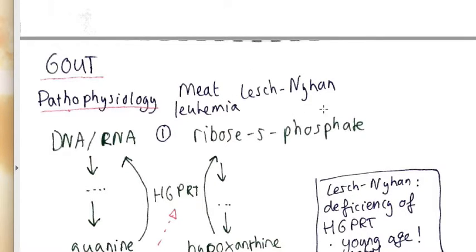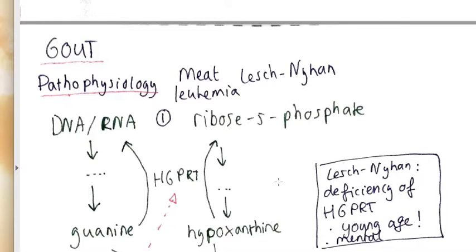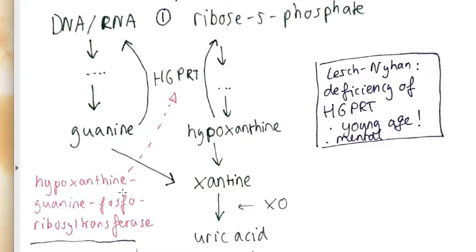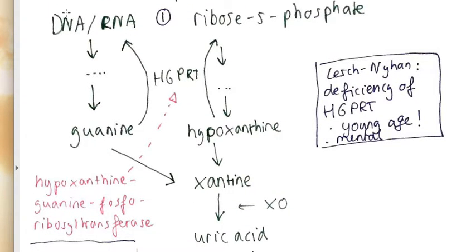Or you can have Lesch-Nyhan, which is an enzyme deficiency. The disease I will get into it right now is a disease that kind of blocks the escape route of the formation of uric acid. Because usually what happens is that DNA breaks down to guanine and ribose-5-phosphate breaks down to hypoxanthine, and this enzyme, the hypoxanthine-guanine phosphoribosyl transferase (HGPRT), reverses this product into this one. But if you have a shortage or deficiency of this one, then you will get more uric acid.